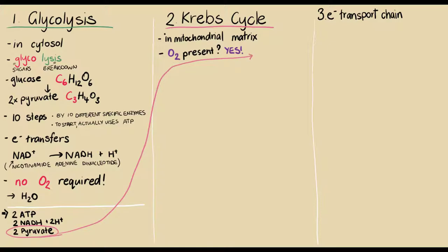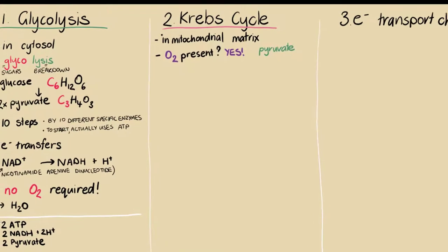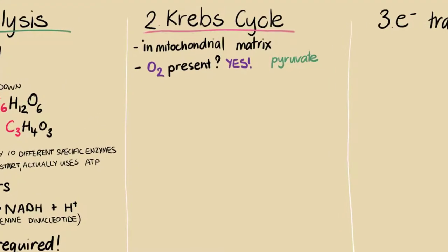If so, pyruvate molecules are moved from the cytosol into the mitochondria and are converted into something called acetyl coenzyme A, which is another molecule which is needed to kickstart the Krebs cycle.